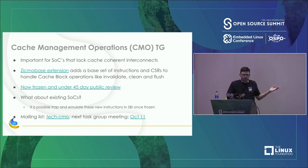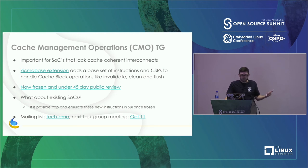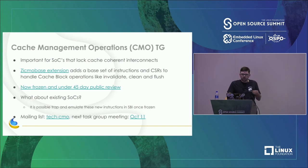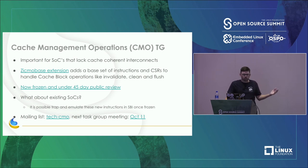For existing chips without these cache management instructions, we can implement them in the kernel. If on hardware that doesn't have these instructions, with RISC-V it'll always trap into SBI. OpenSBI could then emulate those instructions — not fast, but a way to handle them for older hardware.